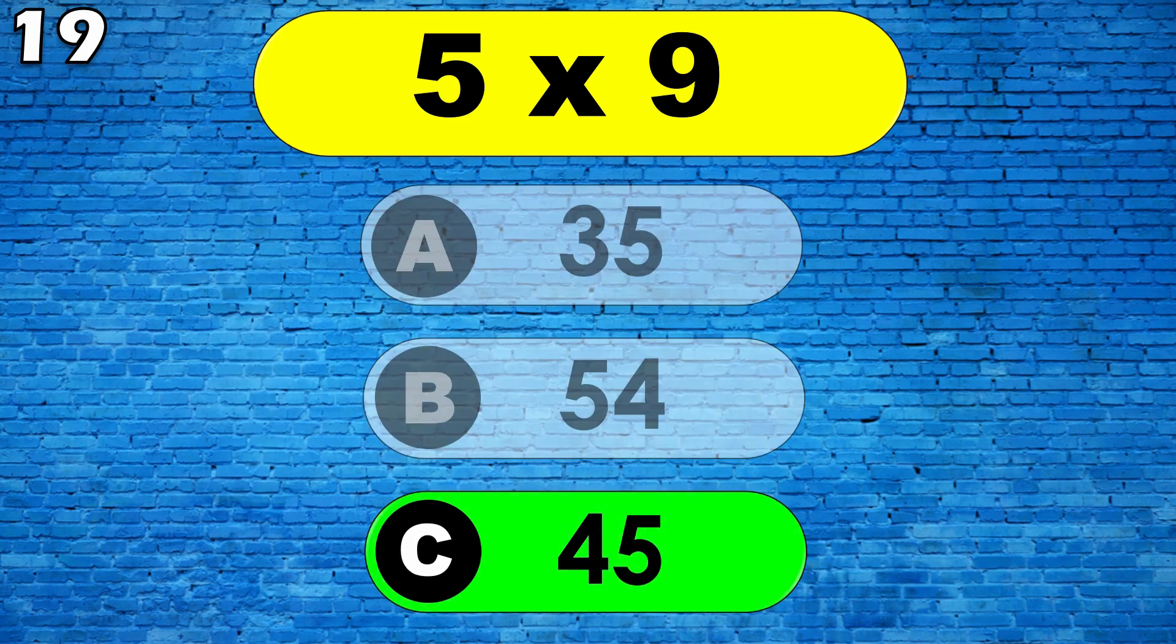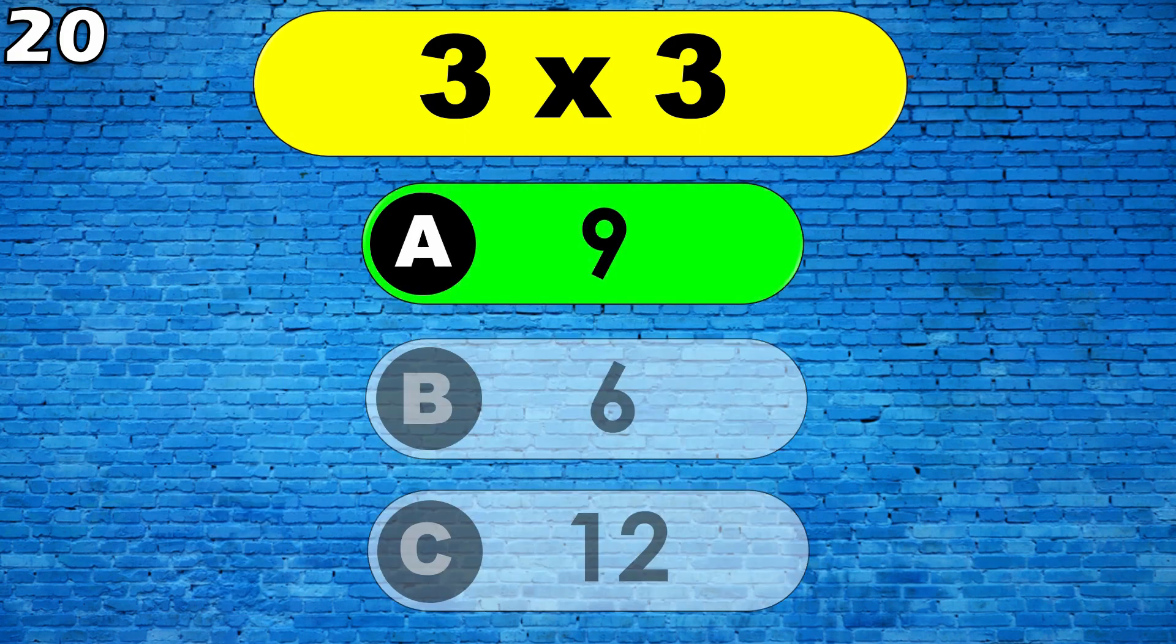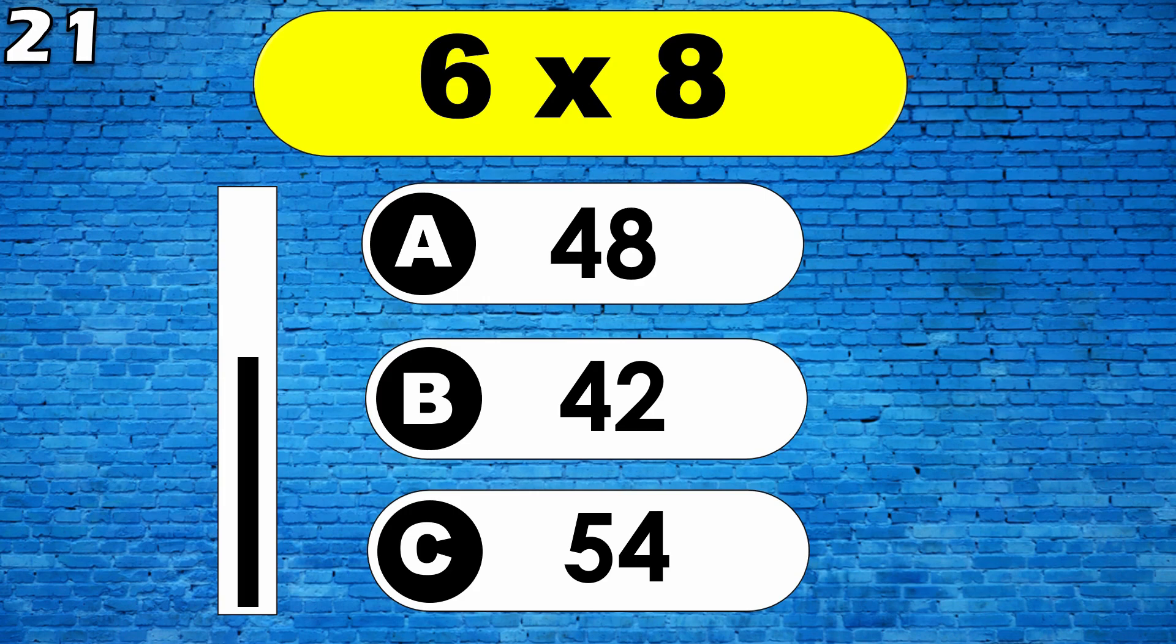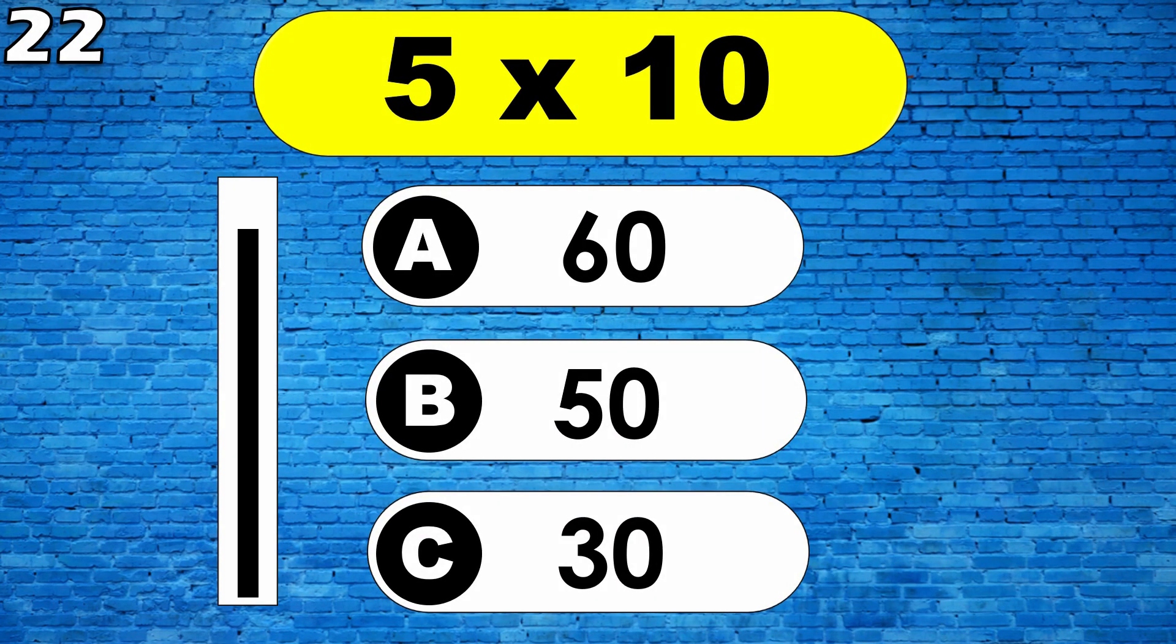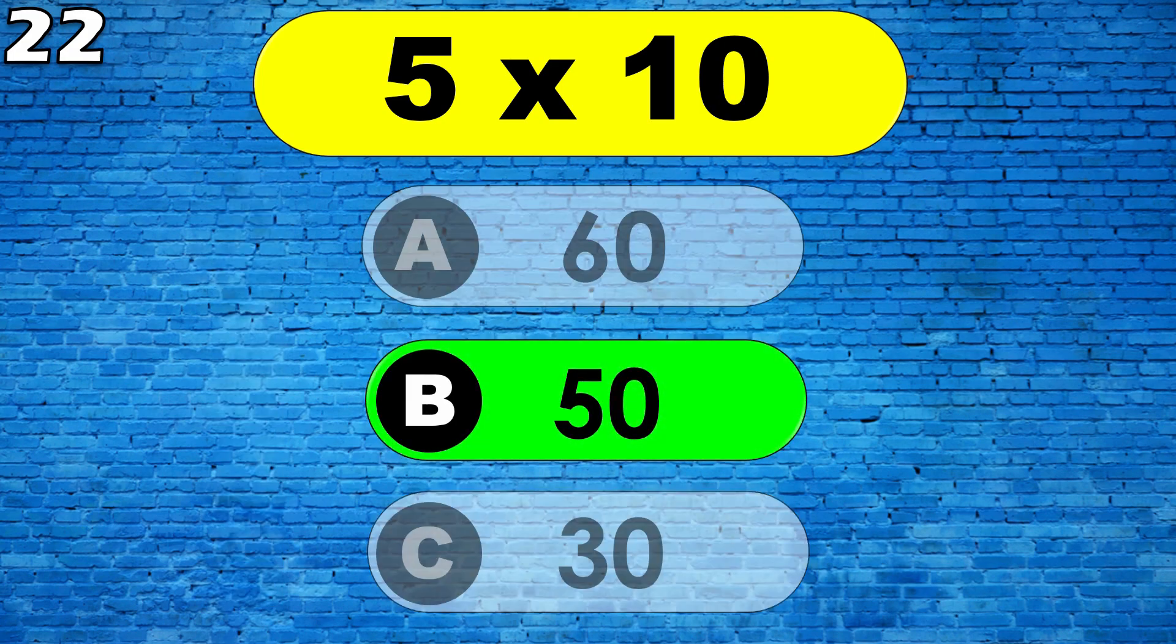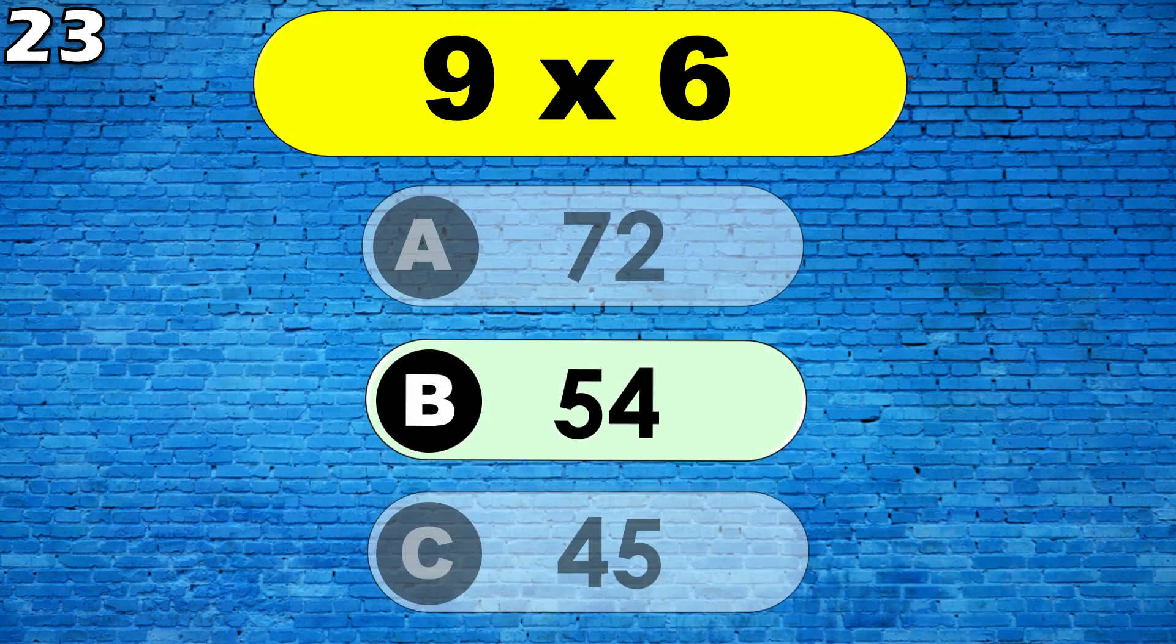Five nines are forty-five. Three threes are nine. Six eights are forty-eight. Five tens are fifty. Nine sixes are fifty-four.